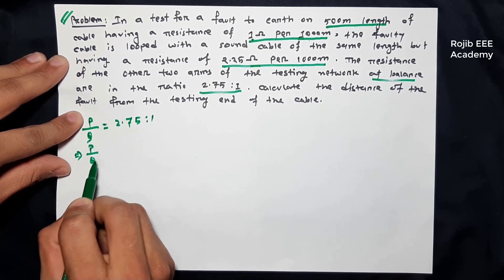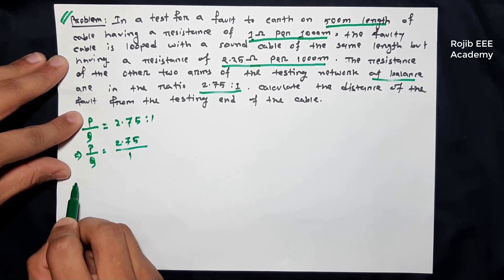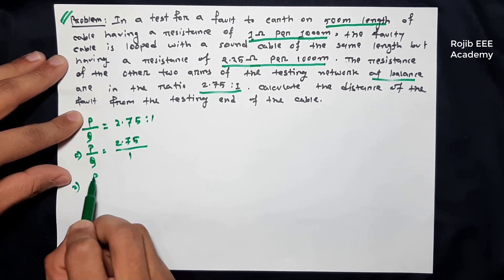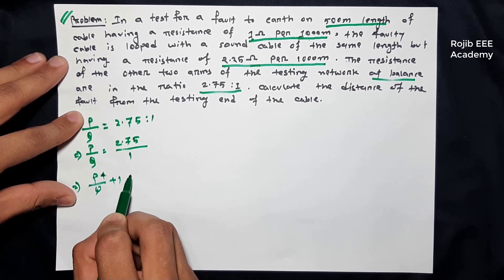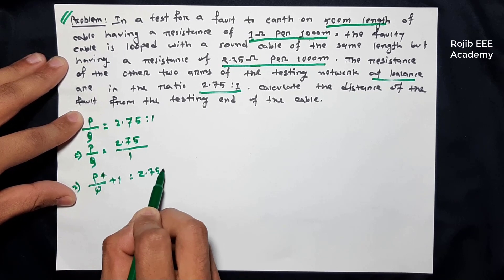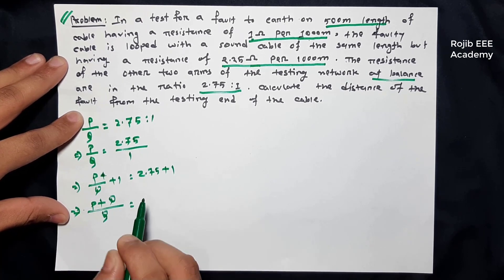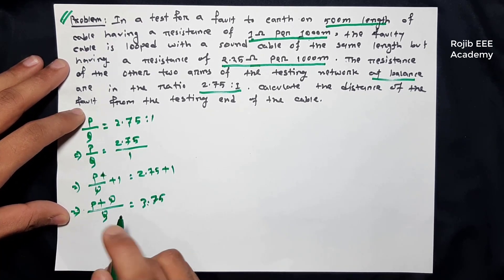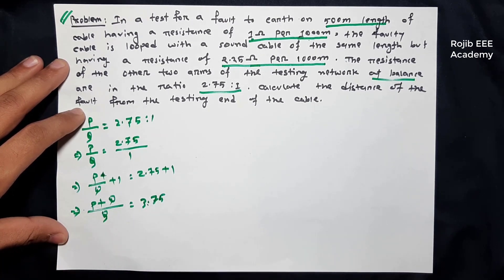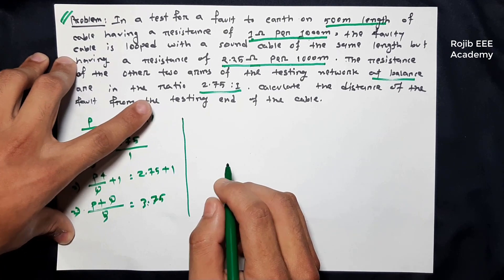P by Q is equal to 2.75 divided by 1. So if we add 1 to both sides, P by Q plus 1 is equal to 2.75 plus 1. That means P plus Q divided by Q is equal to 3.75. So we have to do the calculation. Now we have to find the resistance of the loop.